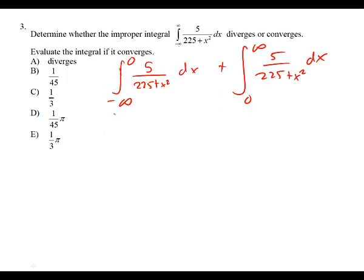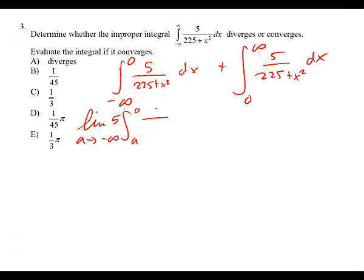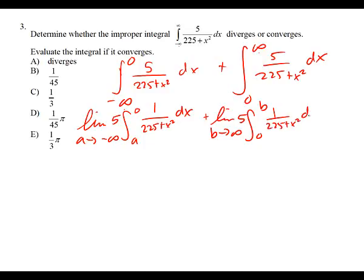It is now an improper integral. We have to replace both the negative infinity and the positive infinity with variables. This one is the limit as A approaches negative infinity from A to zero, with the five pulled out front — five times one over 225 plus x squared, DX — plus the limit as B approaches infinity from zero to B of five times one over 225 plus x squared, DX.